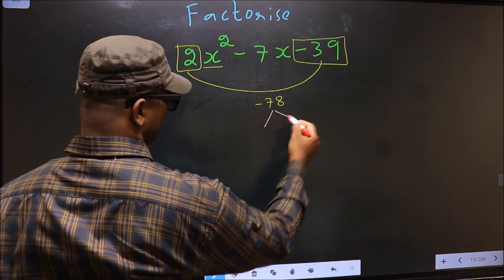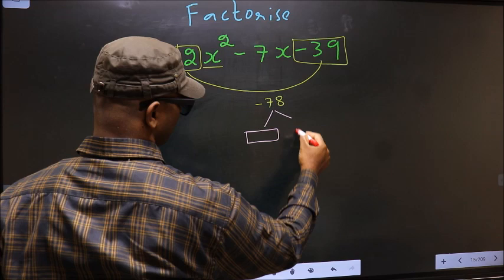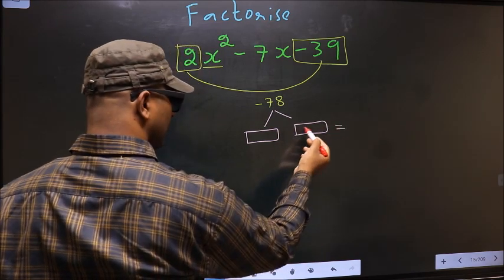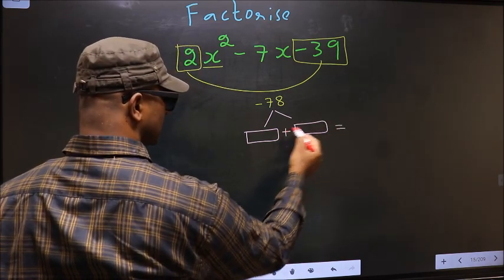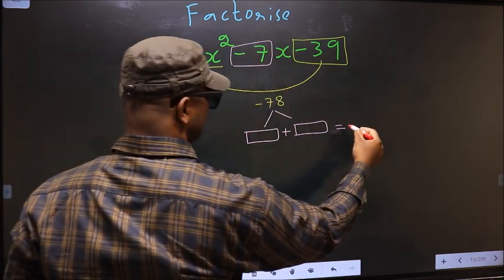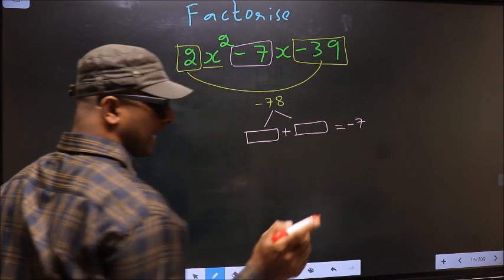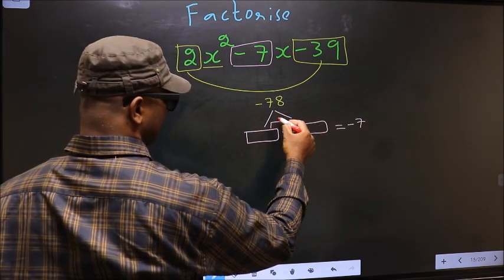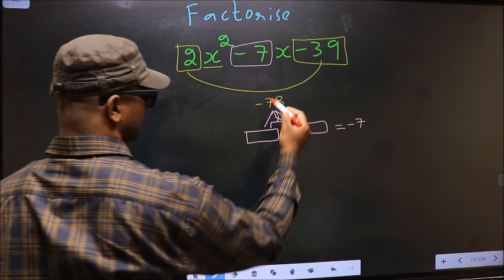Now you should look out for two numbers such that when you add these two numbers you should get the middle coefficient (that is -7), and also when multiplied you should get -78.